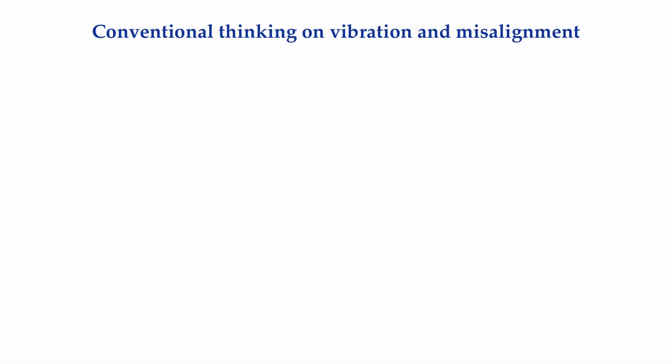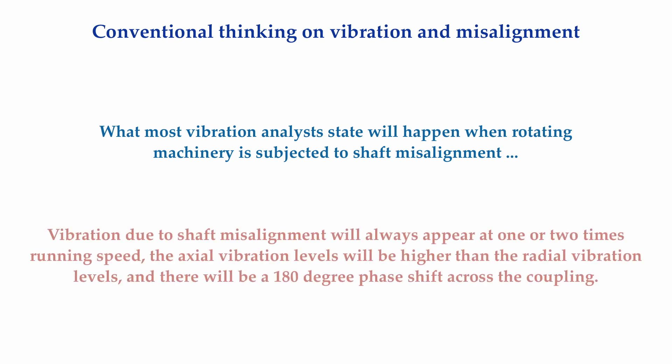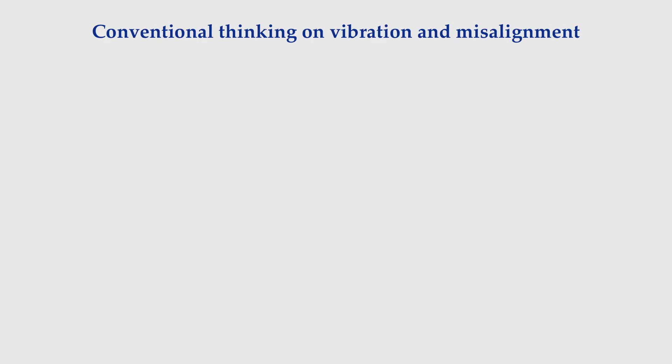If you were to ask what shaft misalignment looks like on running rotating machinery, a large percentage of people currently working as vibration analysts would answer that vibration due to a shaft misalignment condition will exhibit vibration at running speed and twice running speed frequencies. The axial vibration levels will often be higher than the radial vibration levels, and there will be a 180-degree phase shift across the coupling. Is this true? Will this always happen?